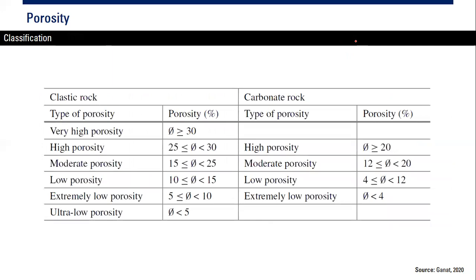Porosity can be classified into several categories. For clastic rocks: very high porosity is ≥30%, high is 25–30%, moderate is 15–25%, low is 10–15%, extremely low is 5–10%, and ultra-low (shale reservoir) is below 5%. For carbonate rocks, a different classification applies: high porosity is ≥20%, with corresponding moderate, low, and extremely low categories.